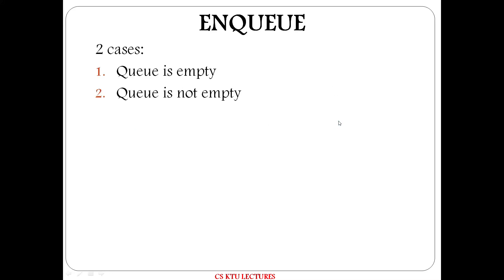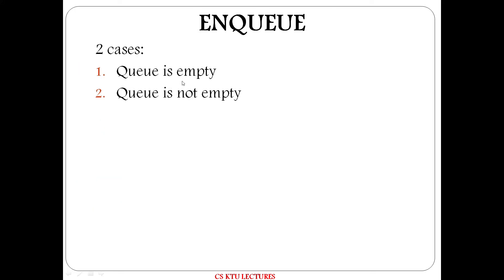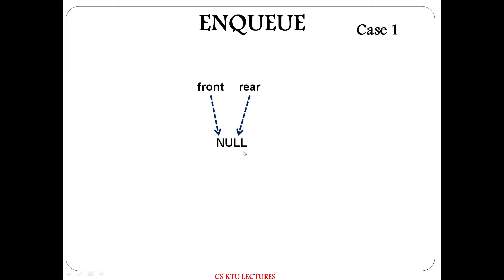EnQueue algorithm: the arguments are front and rear pointer and the newly inserted item. Then create a node: new node data equals item, new node link equals null. There are two cases — Case 1: the Queue is empty; Case 2: the Queue is not empty. In Case 1, the Queue is empty, so front and rear both point to the new node.